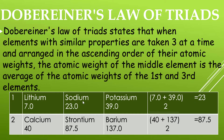We can check another triad where calcium, strontium, and barium are present. The atomic weight of calcium is 40, strontium is 87.5, and barium is 137.0. Taking the mean of the first and third elements — (40 + 137) / 2 — we get 87.5, which is the atomic weight of strontium. These two are examples of Dobereiner's law of triads.